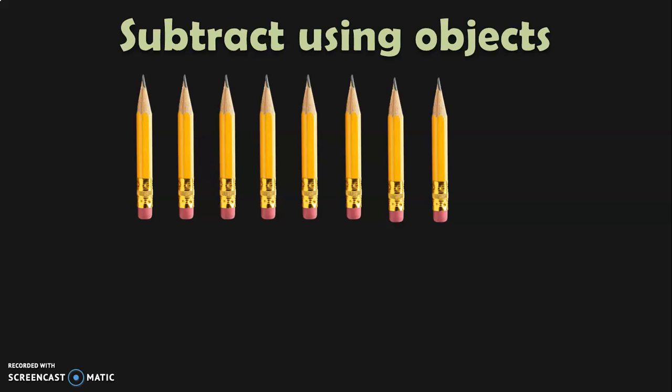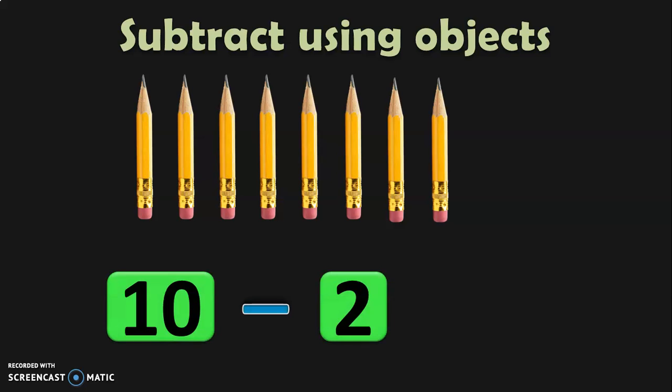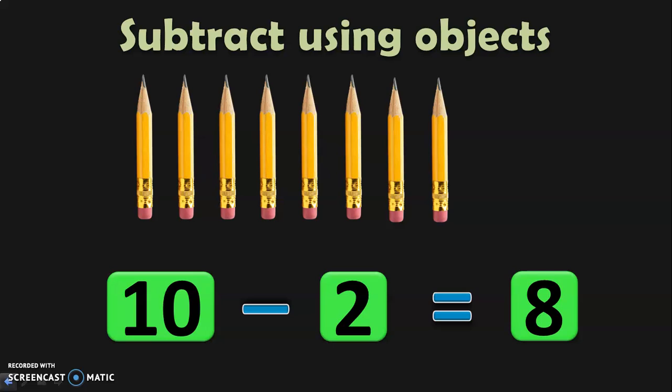Counting: 1, 2, 3, 4, 5, 6, 7, 8. So you have 8 pencils remaining with you. Now how do you represent this in the form of numbers? 10 minus 2 — that is, you had 10 pencils, you gave away 2 pencils to your friend, and the remaining number is 8. The answer in subtraction is called the difference. So 10 minus 2 is equal to 8, and the difference between the 2 numbers is 8.